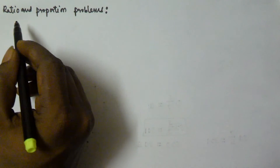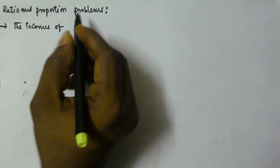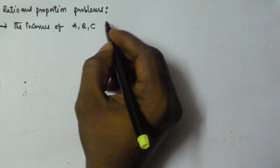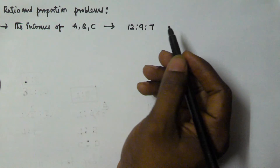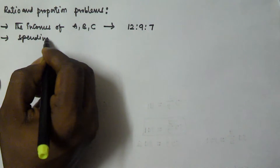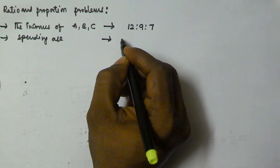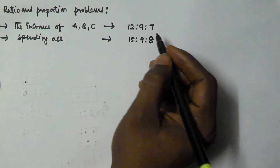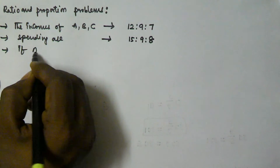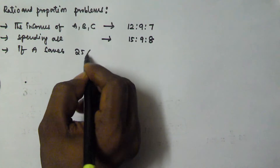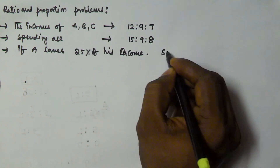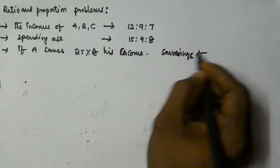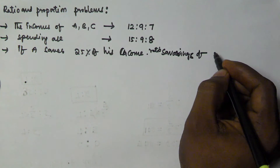In this video we will see another problem related to ratio and proportion. The incomes of A, B, and C are in the ratio 12:9:7, and the spendings are in the ratio 15:9:8. If A saves 25% of his income, then what is the ratio of savings of A, B, and C?